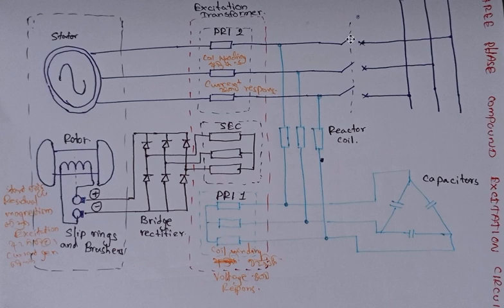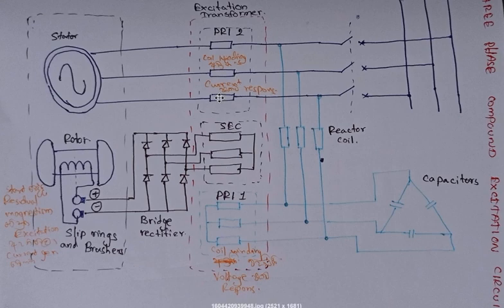Now consider what happens after we close the switch. We close the switch and connect to a load on this line. The generator then tries to give current, so current flows through this coil winding. The secondary winding now responds more to the primary two coil winding. The secondary winding uses primary two to generate the excitation current.